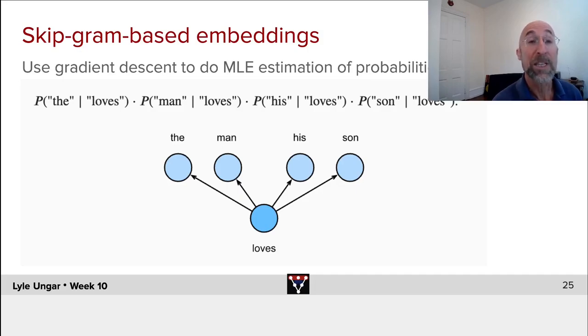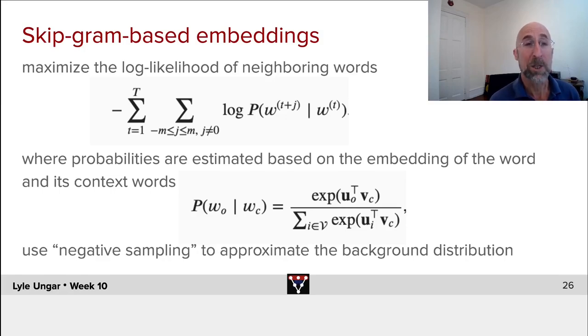So how do we model these probabilities? The probability of the given loves? How likely is this word to show up in the context of my target word loves? Well, what we're going to do is to compute the probability over the whole capital T tokens in my sentence or my string, my document. And what we're going to do is the probability of each neighboring word, W sub T plus J, could be to the left or to the right, given the target word W sub T. That's loves, and these are the words the, man, his, and son.